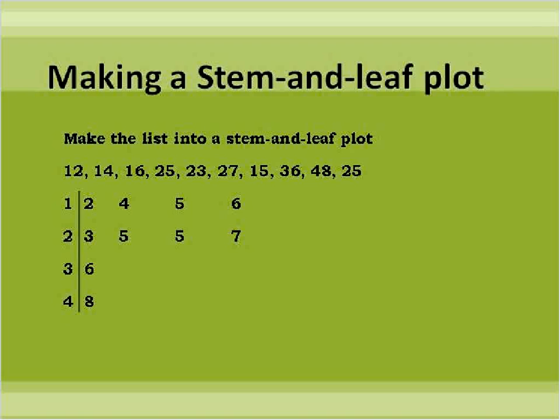Let's go ahead and make a stem and leaf plot. What we have here is a list of numbers that we have made into a stem and leaf plot. You see inside our list of numbers, they're not all in order. But we have 12, 14, 16, 25, 23, 27, 15, 36, 48, 25. And we've taken all of these numbers and put them into a stem and leaf plot.